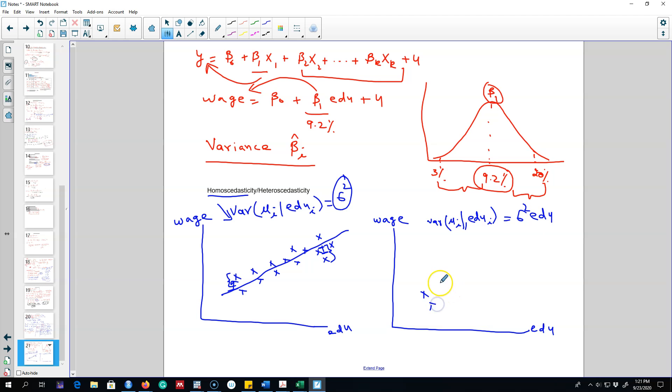As an example, if we have data like this and we draw a line between all these points, we see that the variance, the distance between our predicted value and actual value, is increasing with the education level.